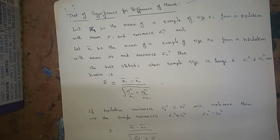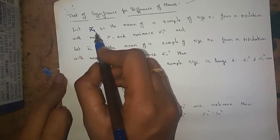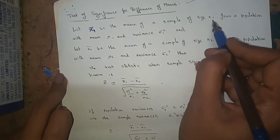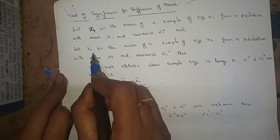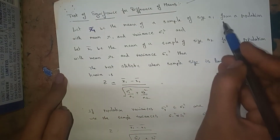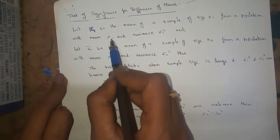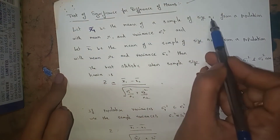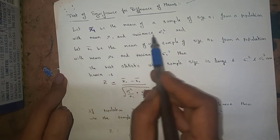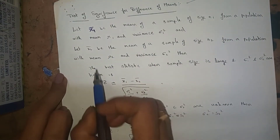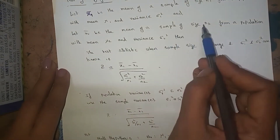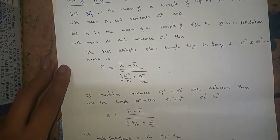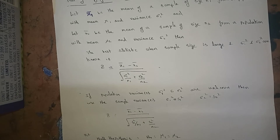Let x1 bar be the mean of a sample of size n1, from a population with mean mu1 and variance sigma1 square. Let x2 bar be the mean of a sample of size n2, from a population with mean mu2 and variance sigma2 square.